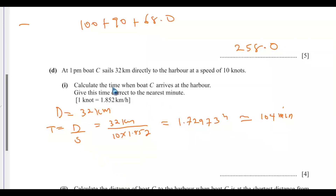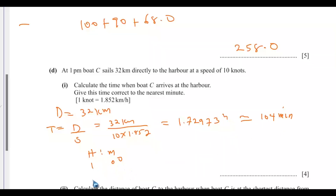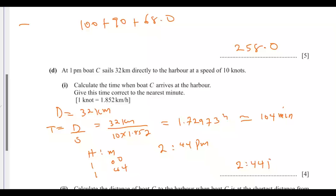So we want to calculate the time when boat C arrives at the harbor. Departing at 1 p.m., we add 104 minutes, which splits into 1 hour and 44 minutes. Adding 1 hour and 44 minutes to 1:00 p.m. gives 2:44 p.m. That is the time boat C arrives at the harbor. You may also write it in 24-hour time.